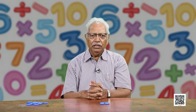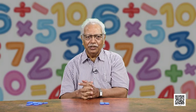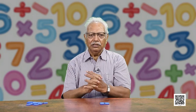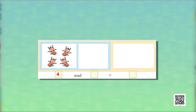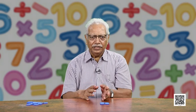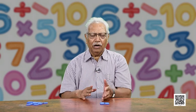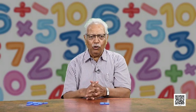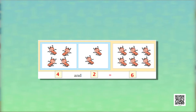And now, slowly, instead of AND we are going to use the symbol of addition. For example, here these are 4 insects and 2 more insects join in. So how many do they become? You can merge them together and start counting from 1, 2, 3, 4, 5, 6, or you can count further from 4 and say 4, 5, 6. So, 4 and 2 is equal to 6.